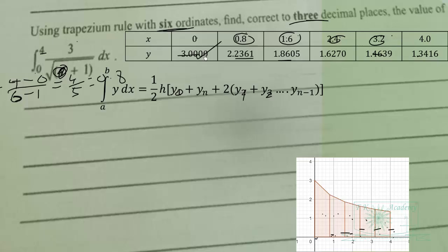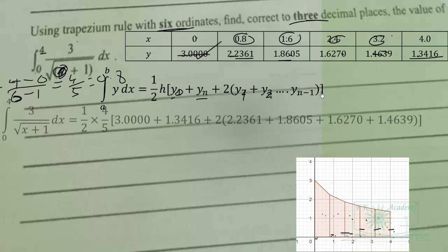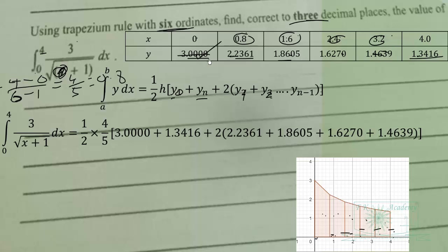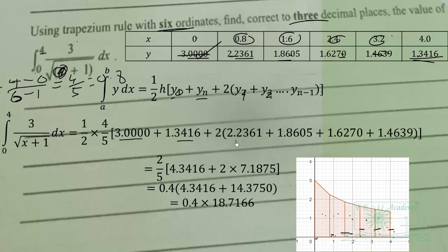Add them together. When we simplify, we get 0.4 times 18.7166, which equals 7.48664. When we round to three decimal places, we have 7.487 square units.